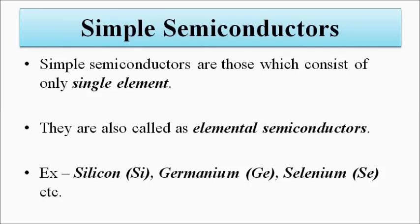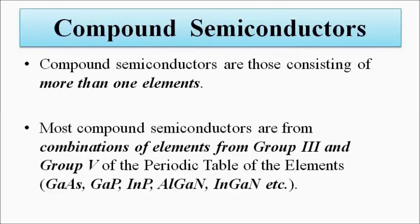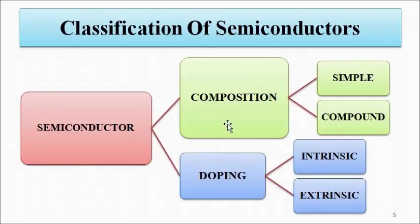On the basis of composition, semiconductors are classified as simple and compound. Simple semiconductors consist of a single element and are also called elemental semiconductors — examples include silicon, germanium, and selenium. Compound semiconductors consist of more than one element, mainly formed from group 3 and group 5 of the periodic table. Examples include gallium arsenide (GaAs), gallium phosphide, indium phosphide, aluminum gallium nitride, and indium gallium nitride.